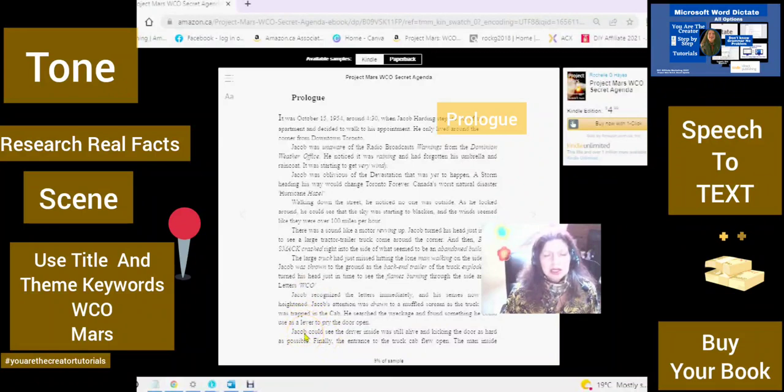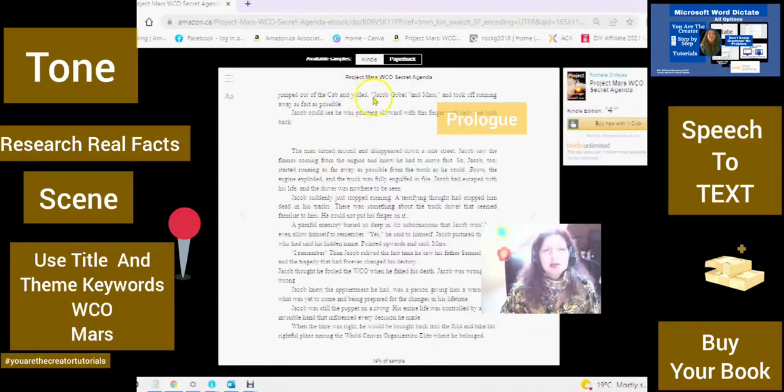Jacob recognized the letters immediately and his senses were now heightened. Jacob's attention was drawn to the muffled scream as a truck driver was trapped in the cab. He searched the wreckage and found something he could use as a lever to pry open the door. Jacob could see the driver inside was still alive and kicking the door as hard as possible. Finally, the entrance to the truck cab flew open. The man inside jumped out of the cab and yelled, Jacob, Goble, and Mars.